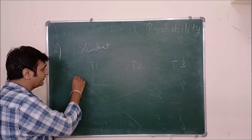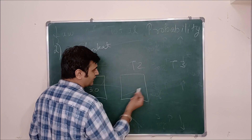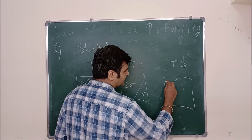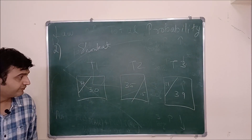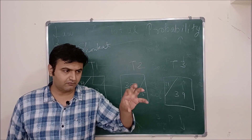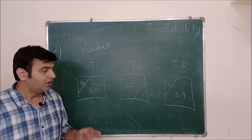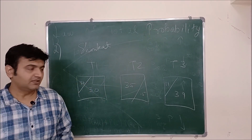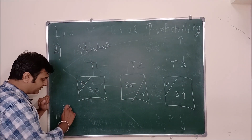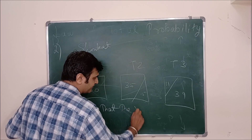In Team 1 there are 20 men and 30 ladies. In Team 2 there are 35 men and 15 ladies. In Team 3 there are 11 men and 39 ladies. You want to choose a person for a particular job, and all three teams have worked on the product and have the proper knowledge. The question is: what is the probability that if you select a person, that person is a man? Let M be the event that the selected person is a man.